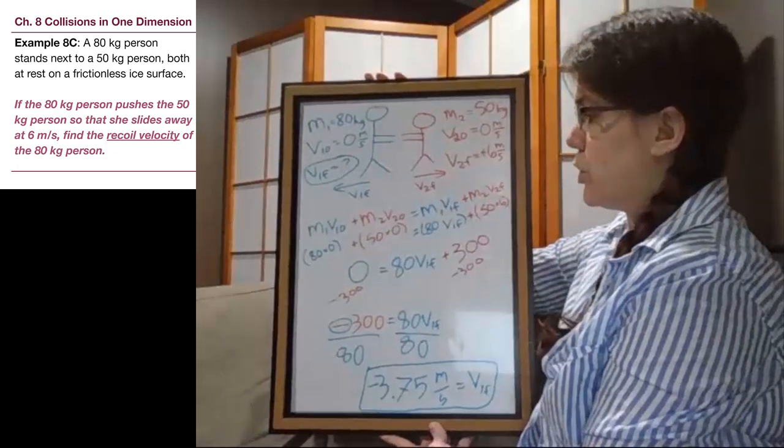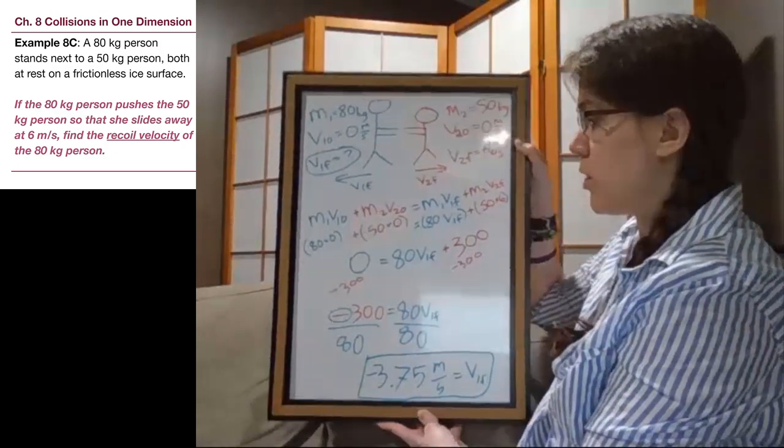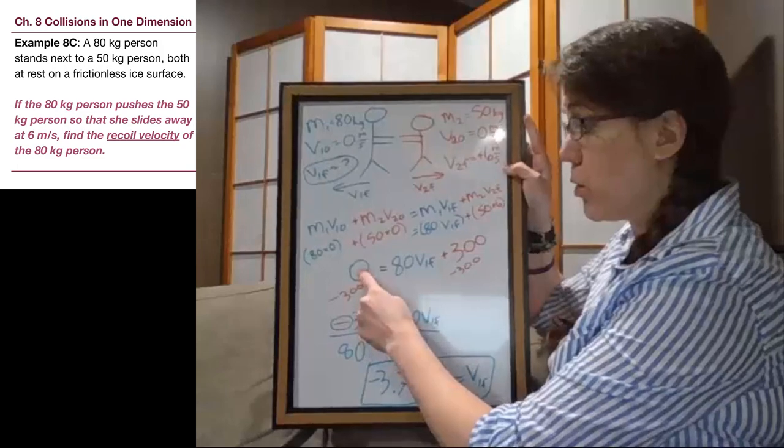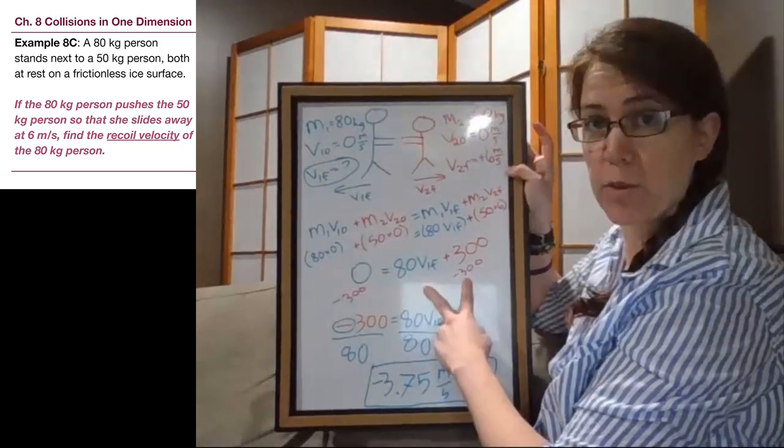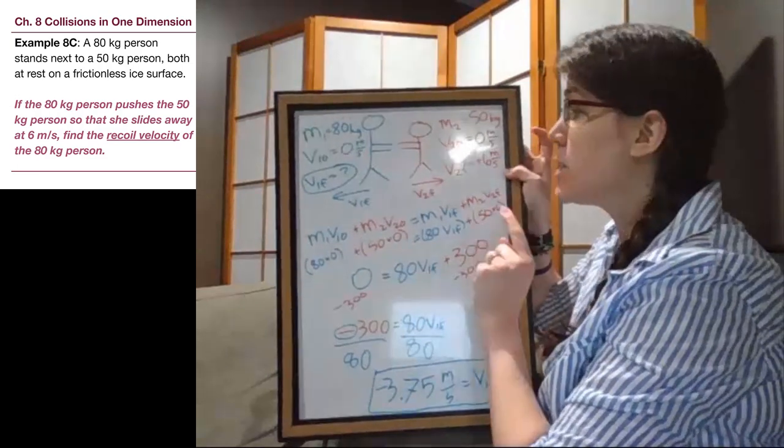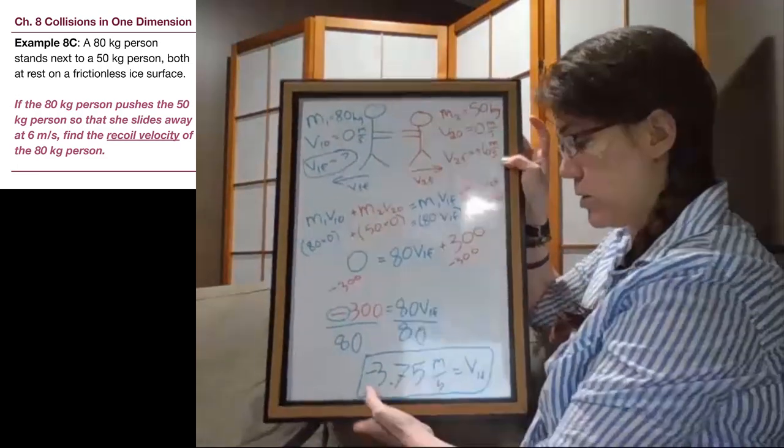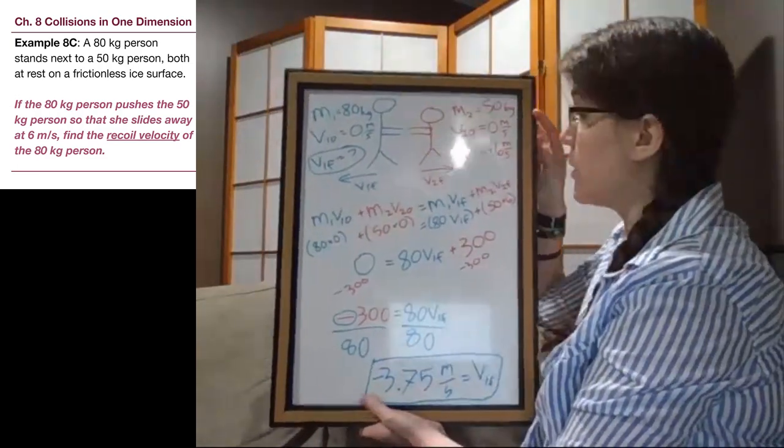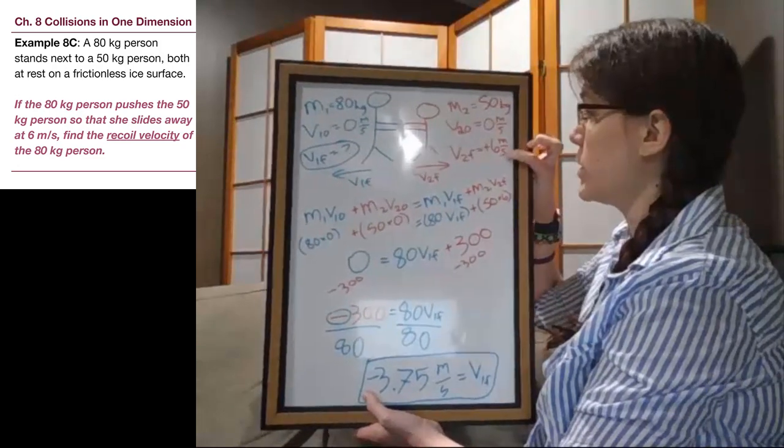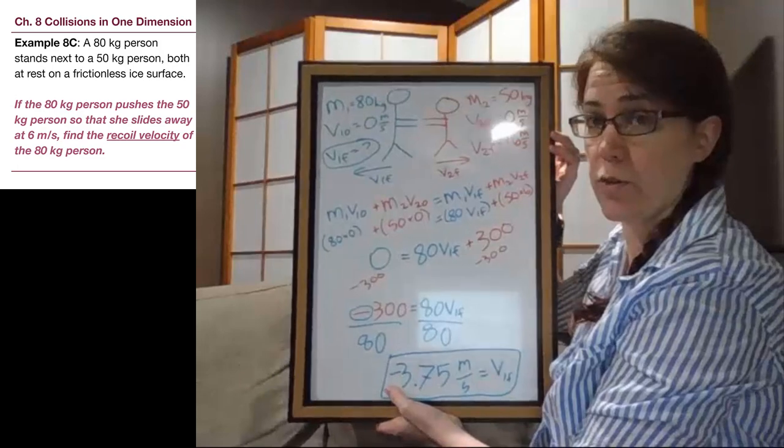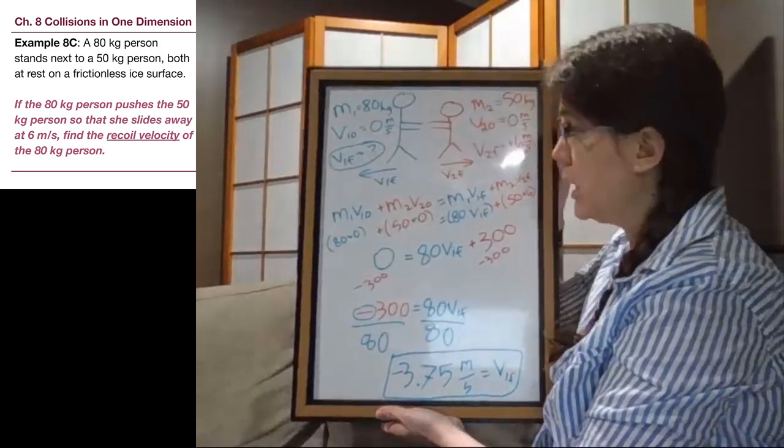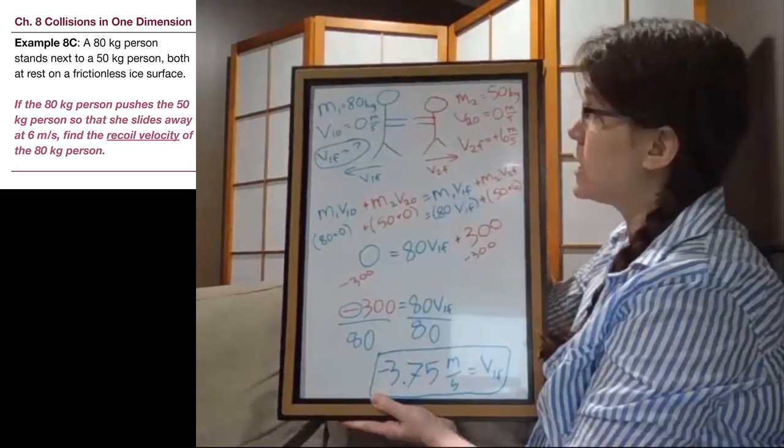So if we look at this situation, we see that we started out with no momentum whatsoever. And yet both objects were able to move. Because they're moving in opposite directions, so we expected that negative sign if we decided that the second person here had a positive final velocity. We expected a negative final velocity.